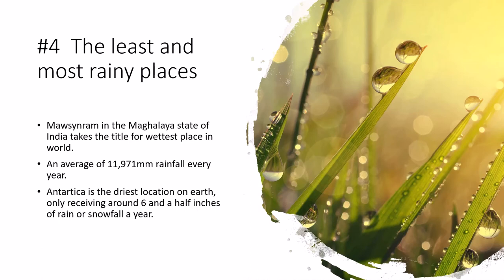Mawsynram in the Meghalaya state of India takes the title for wettest place in the world, with an average of 11,971 mm of rainfall every year. Antarctica is the driest location on earth, only receiving around 6.5 inches of rain or snowfall a year.